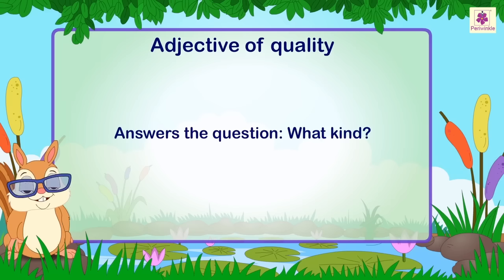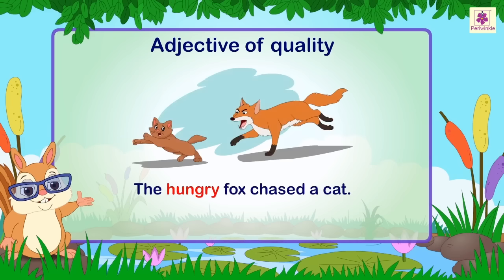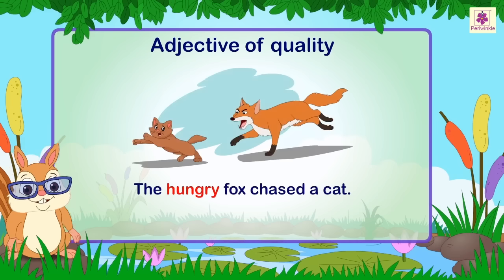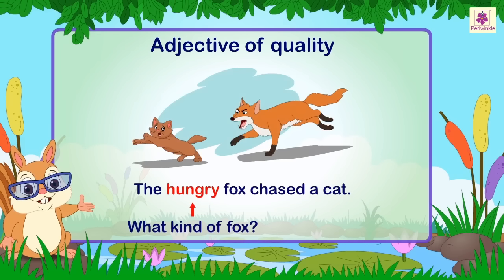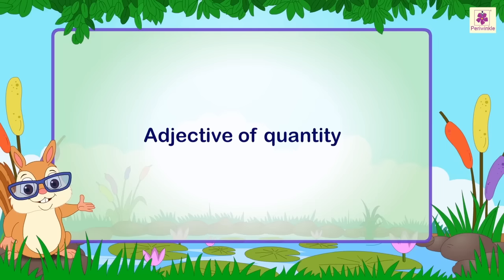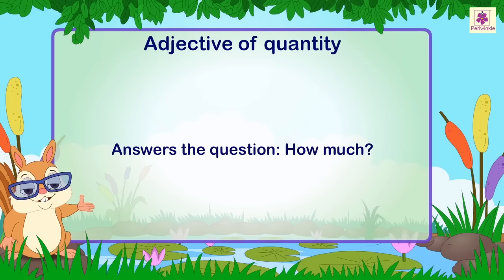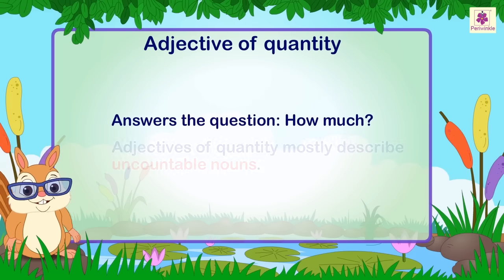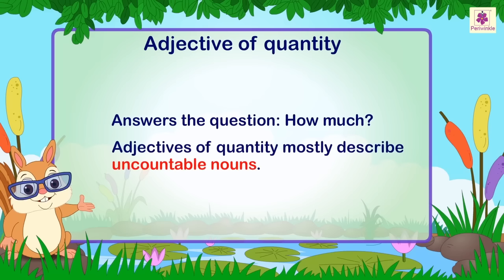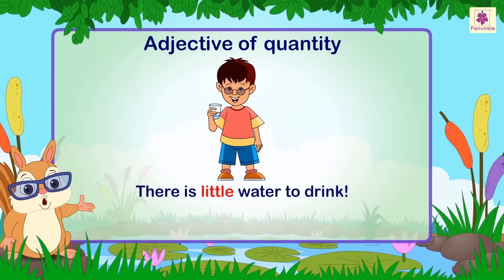Example: the hungry fox chased a cat. 'Hungry' answers the question 'what kind of fox?' Adjective of quantity: an adjective of quantity answers the question 'how much?' Adjectives of quantity mostly describe uncountable nouns. For example: there is little water to drink.